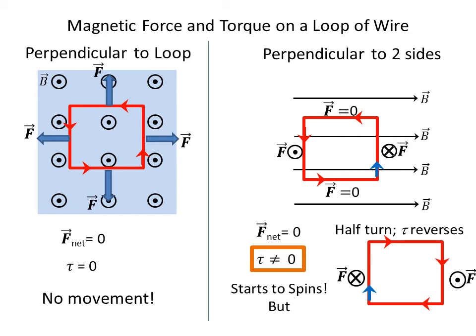What that means is that the torque reverses at this point, so it won't keep turning. Instead, it starts to oscillate back and forth.